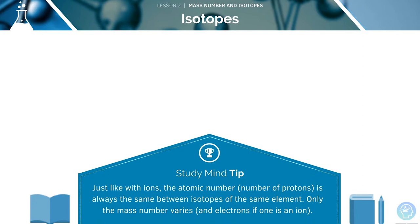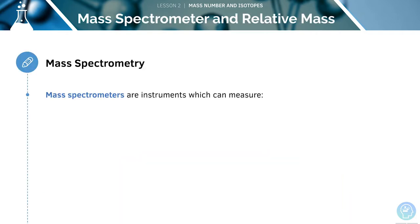Just like with ions, the atomic number is always the same between isotopes of the same element. Only the mass number will vary, and the number of electrons if one is an ion.